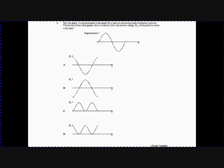Remember: to go from displacement to velocity, we're looking for the gradient. Here's a steep negative gradient, so we're down here. Here's a zero gradient, so we're here. Here's a positive gradient, so we've started off up here. So our velocity-time graph will look something like that.